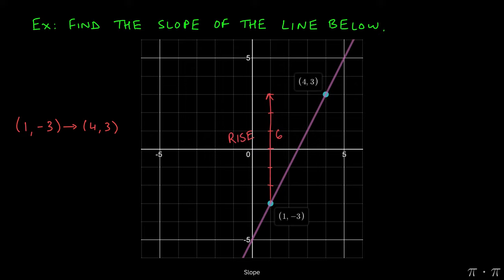Remember that we're thinking in terms of rise over run to find the slope of a line. We can see that from here we would need to move 6 units up in order to get to the same y coordinate, and then from this point we would need to run to the right by 3 units.